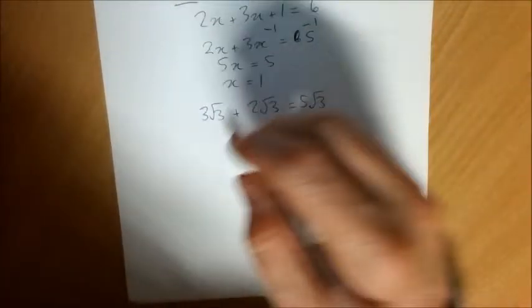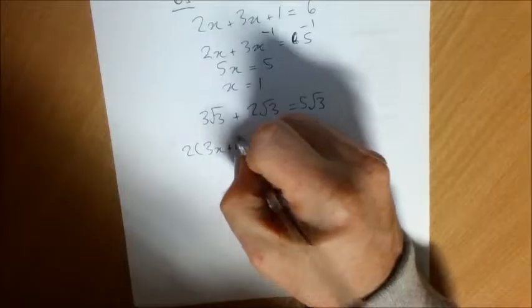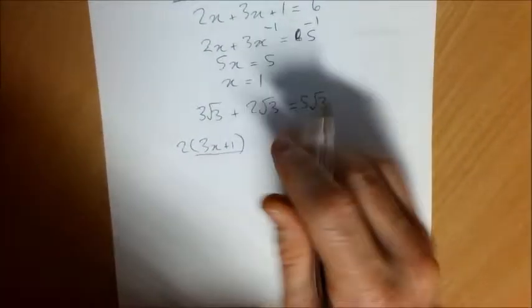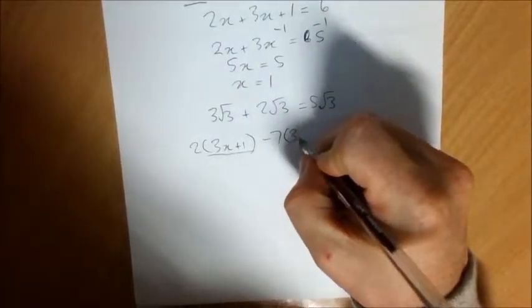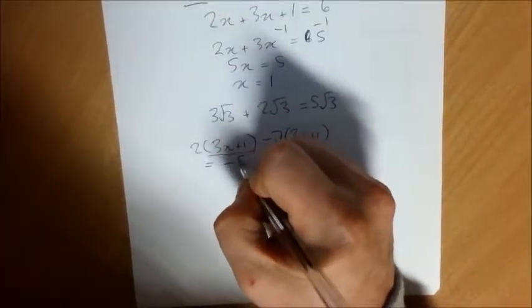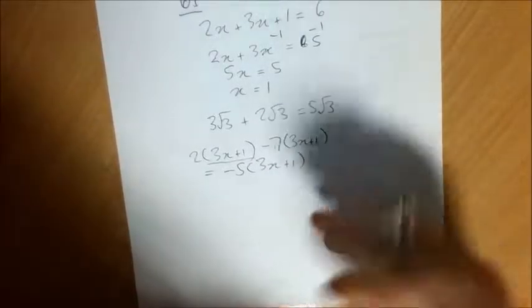And you can have all sorts of complicated things. So I've got two of the six characters that represent that bracket. I'm taking away seven of the six characters that represent the same bracket. So two of something take away seven of something, you've now got negative five of that thing.